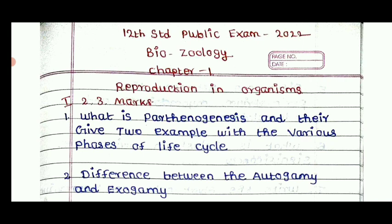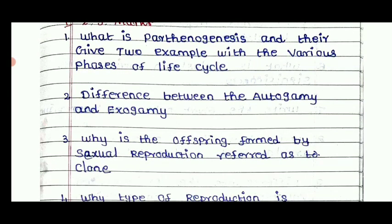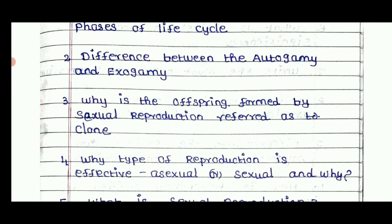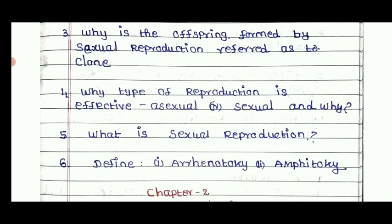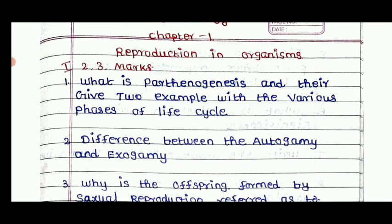For Chapter 1, Reproduction in Organisms, you will learn 2-mark and 3-mark questions. Important topics include: the life cycle of a serious space, the difference between autogamy and exogamy, why offspring formed by sexual reproduction are referred to as clones, why types of reproduction are effective — asexual and sexual — and what sexual reproduction is. There are about 6 questions to learn for 2 and 3 marks, with the difference questions being most important.